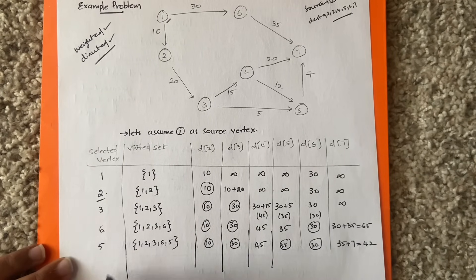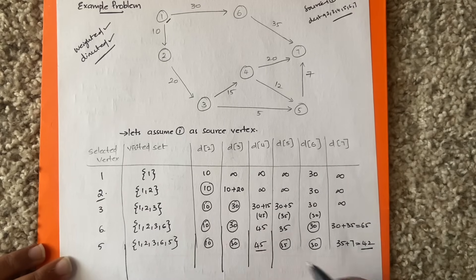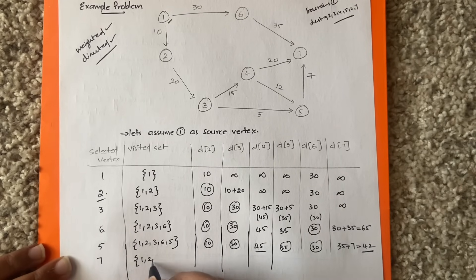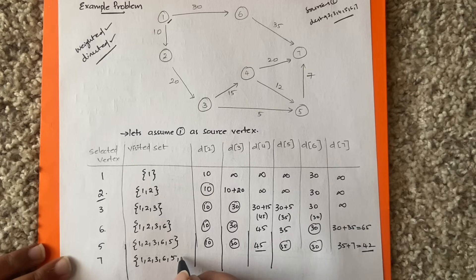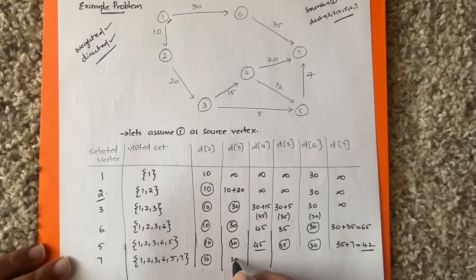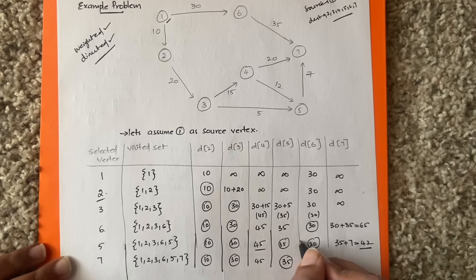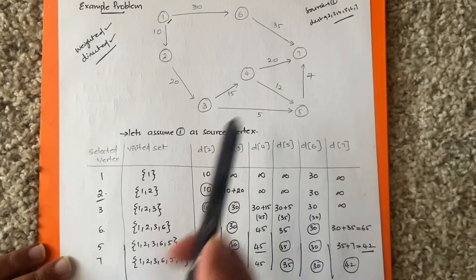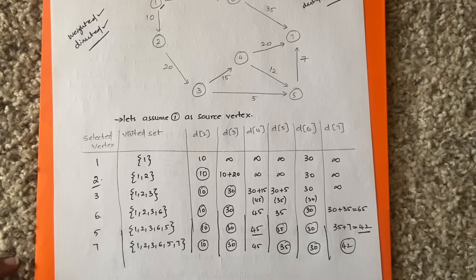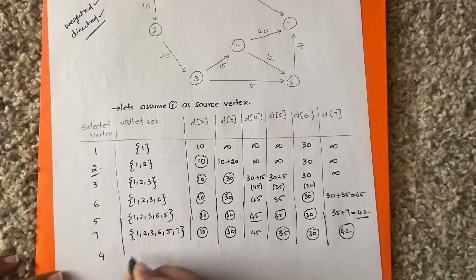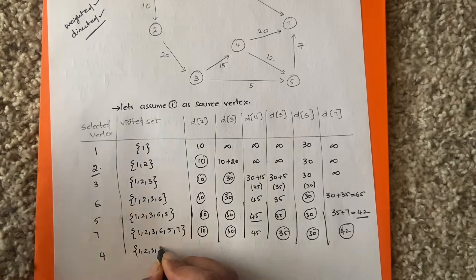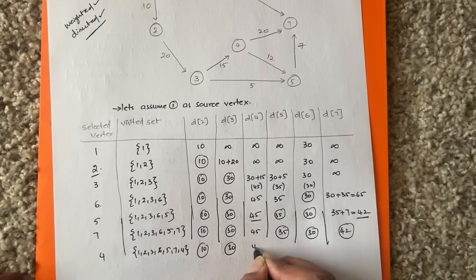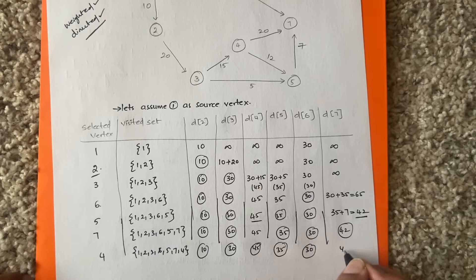In the next step, compare D(7) = 42 and D(4) = 45 — the minimum is 42, so vertex 7 is selected next. The visited set becomes {1, 2, 3, 6, 5, 7}. D(10), D(30), D(45), D(35), D(30) are all fixed. This 42 is also now fixed. From vertex 7 you cannot go anywhere else. The only remaining vertex is 4 with cost 45. So the final visited set is {1, 2, 3, 6, 5, 7, 4} with costs: D(2)=10, D(3)=30, D(4)=45, D(5)=35, D(6)=30, D(7)=42.